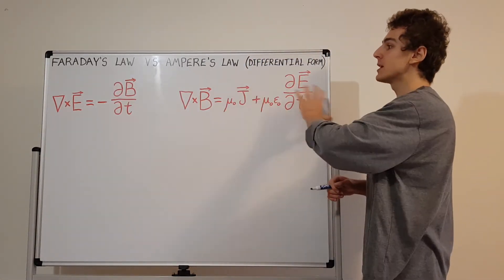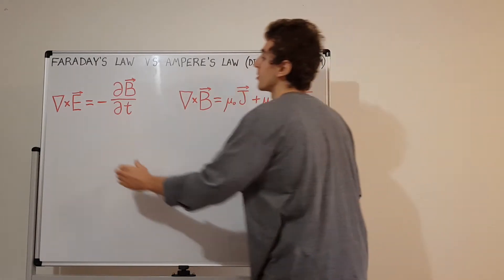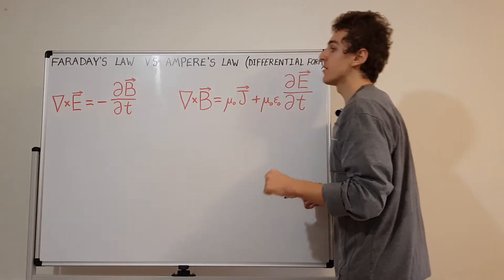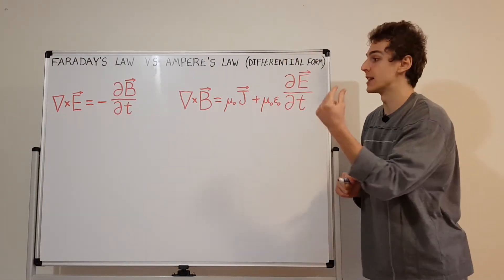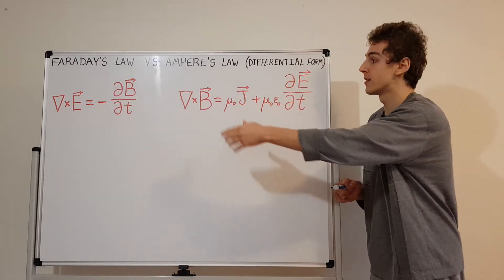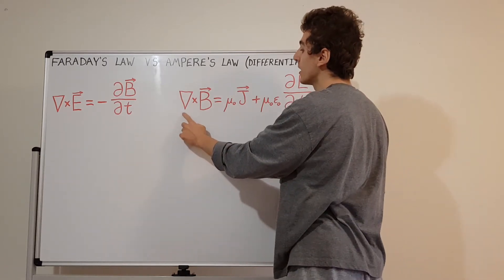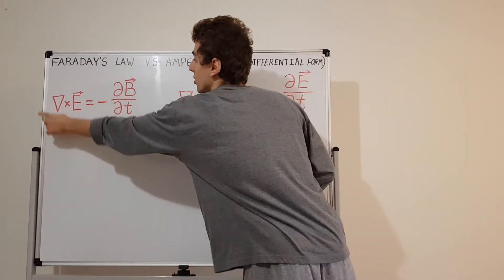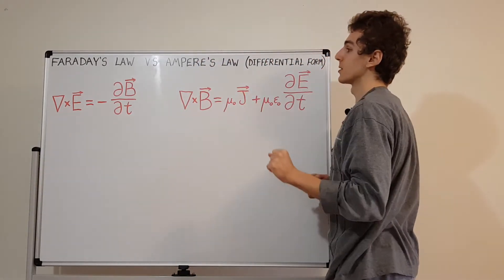Let's compare these two equations in differential form. On the left-hand side of both equations, we have the curl operator. The curl operator takes the del operator — sometimes called nabla — and takes its cross product with whatever vector field you're dealing with. So we have the curl of the electric field and the curl of the magnetic field.